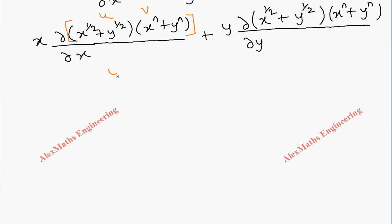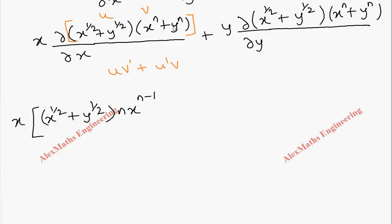Using the uv product rule formula u·v' + u'·v, outside there is x. We write u as (x^(1/2) + y^(1/2)), differentiation of v with respect to x gives n·x^(n-1) — the y term is constant. Then u' is the differentiation of (x^(1/2) + y^(1/2)), which is (1/2)·x^(-1/2), and v is copied as x^n + y^n.